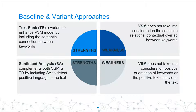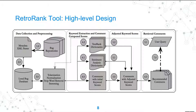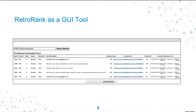I use these three techniques together because using any one independently means missing the strengths of the others — it was necessary to complement them to get the best results. The high-level architecture of my design is based on four blocks: data collection and pre-processing, keyword extraction based on a sentiment analysis dictionary and the TextRank dictionary, using those keywords to boost initial scores from the Vector Space Model, and finally providing the retrieved comments to the user.